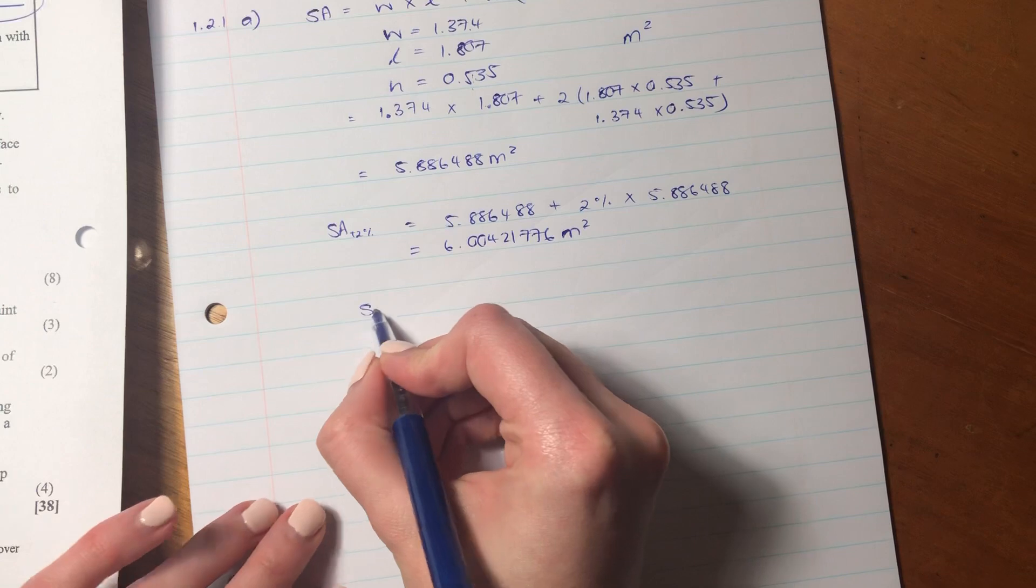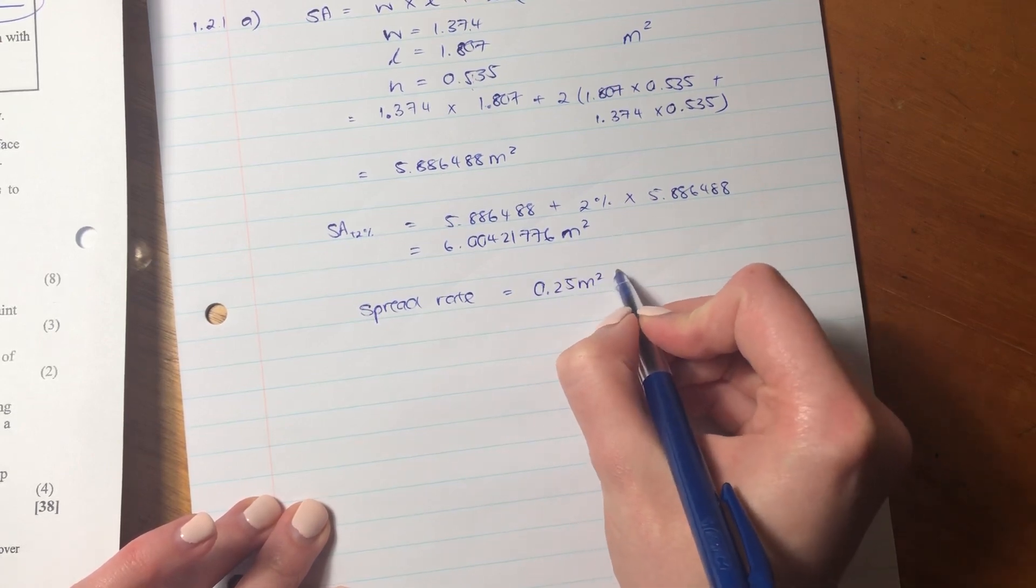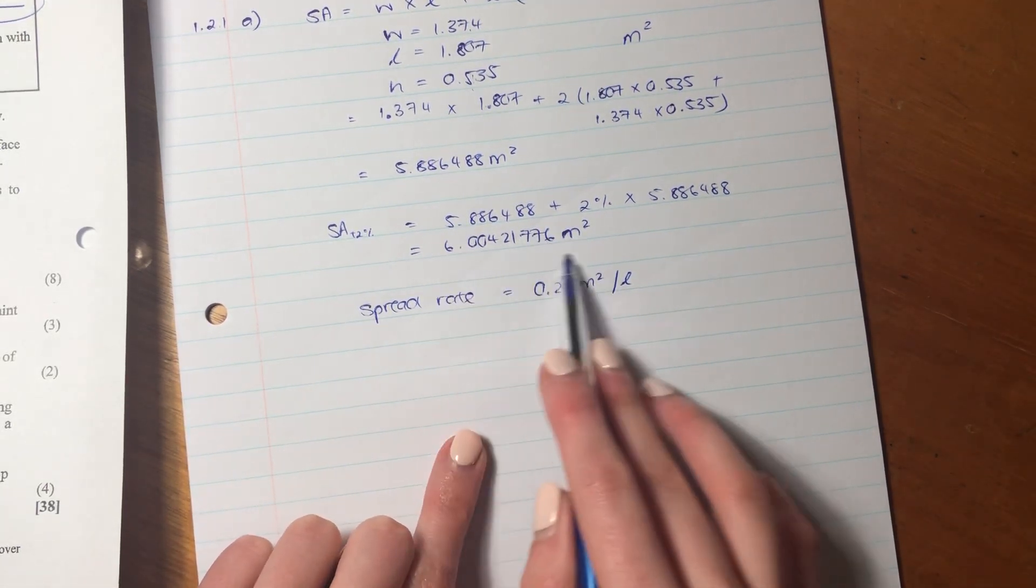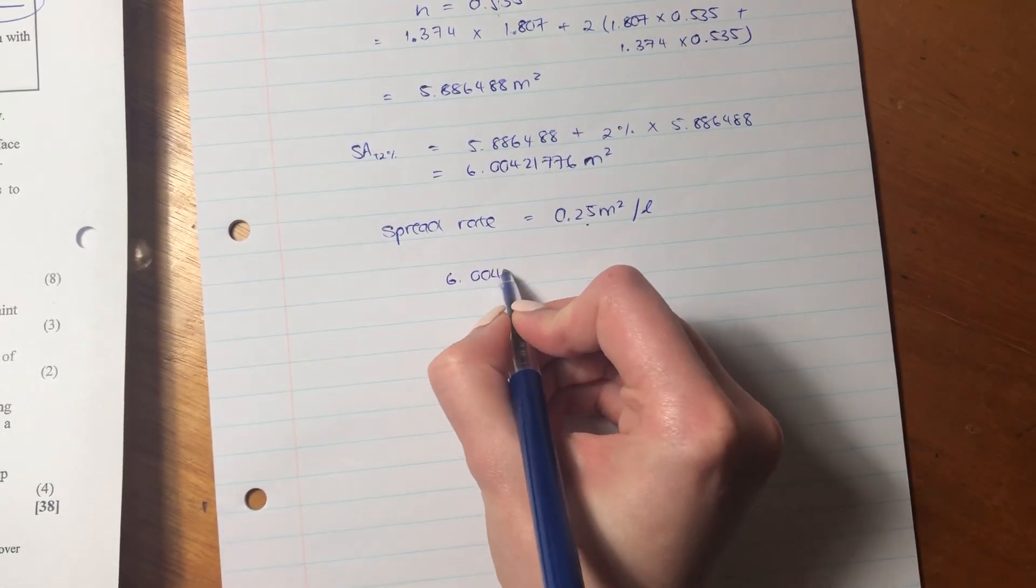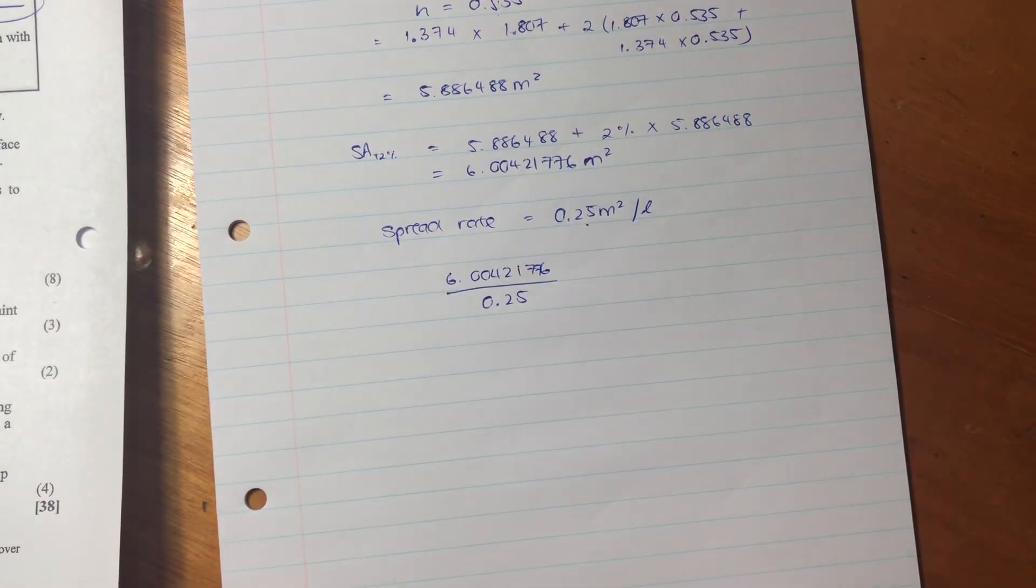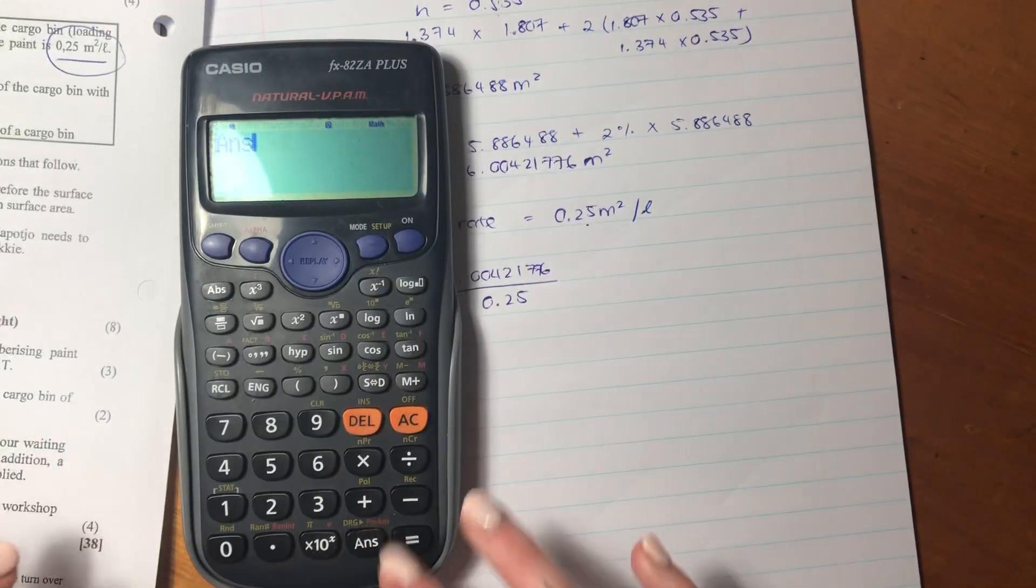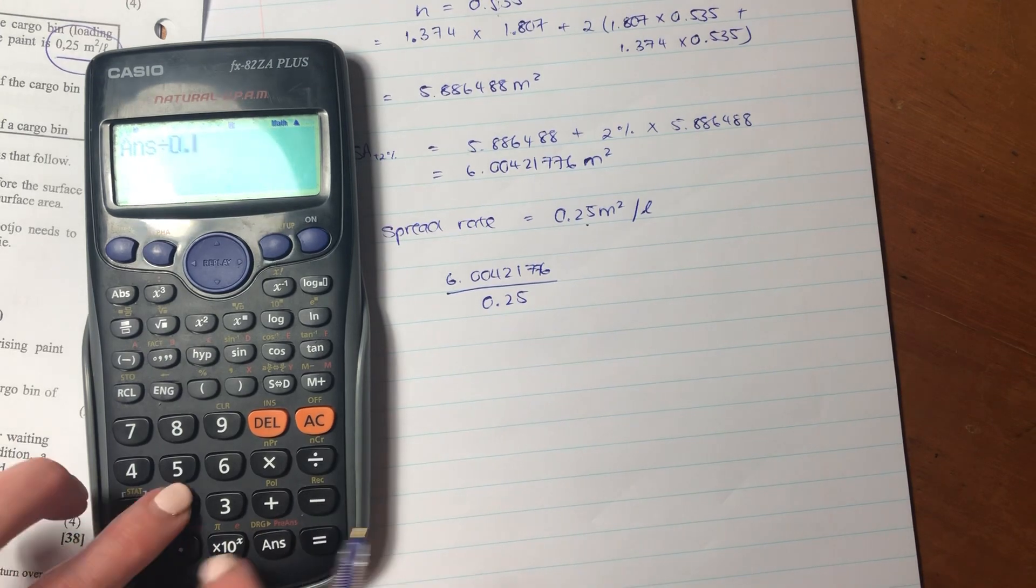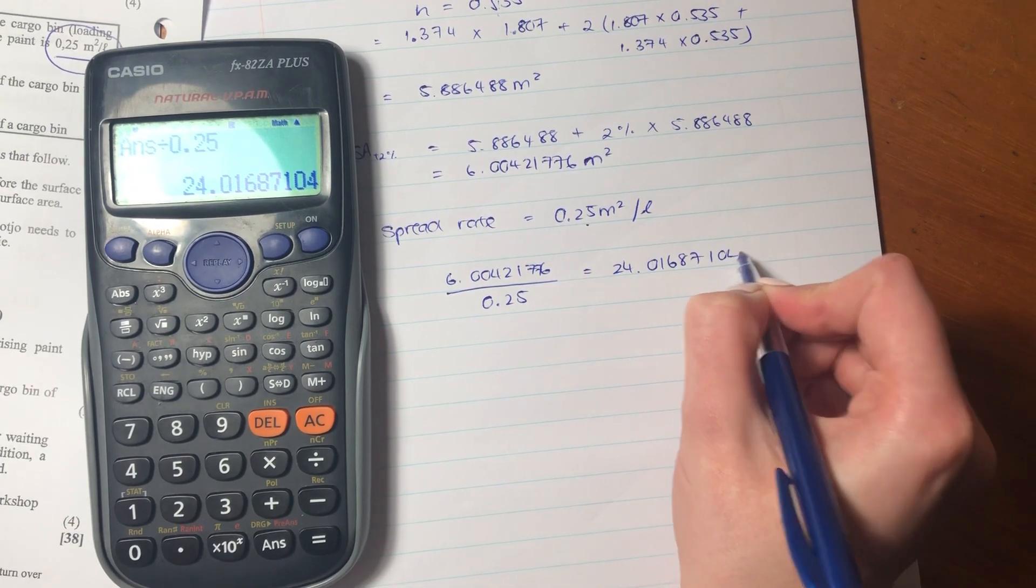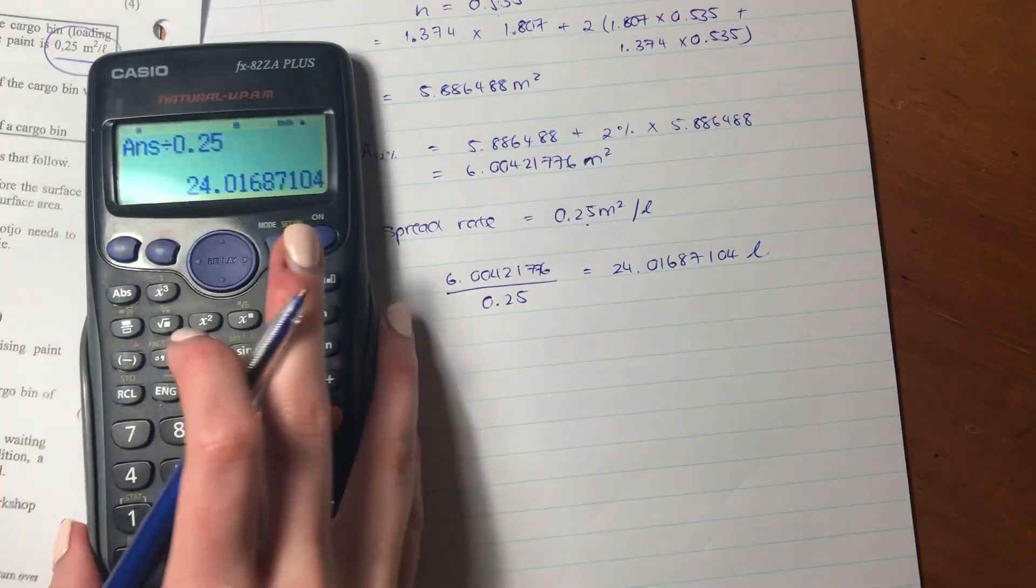Now, we know that the spread rate is 0.25 meters squared per liter. So we have to say, how many liters will we need in order to cover this full six? So we say that answer we've got. And again, don't round off until you've got your final answer, divided by 0.25. Because that will give us the number of liters we need to cover this full surface area. So we got that answer over there. I'm just going to say that answer divided by 0.25. And we need 24.01687104 liters. That's how many liters we need of paint to cover the full surface area.